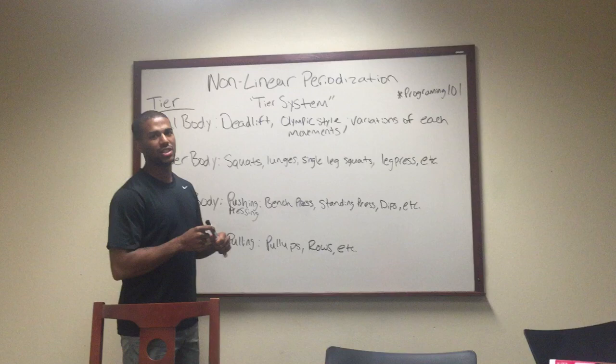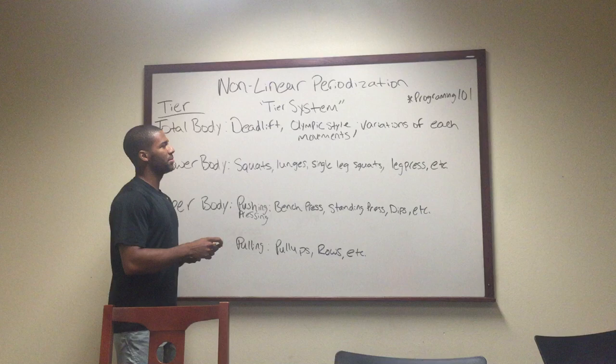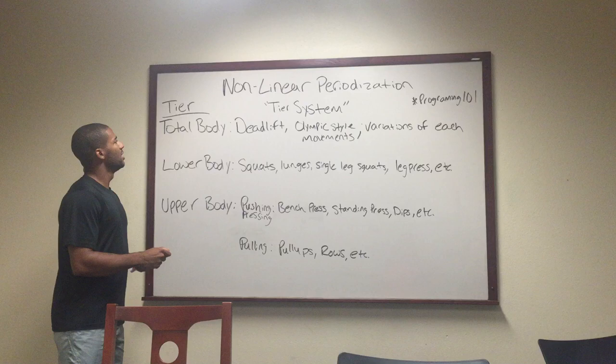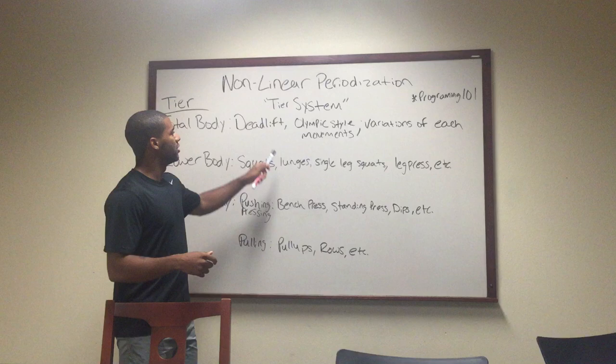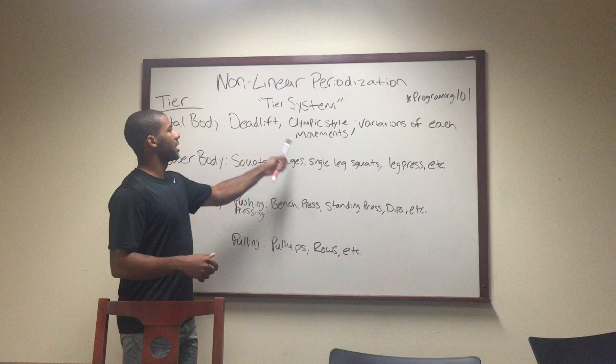The tier system is broken up into three tiers: total body, lower body, and upper body. Total body refers to any movement that you do with your total body — so it's going to be like your deadlift, any of your Olympic style movements, and variations of each. So it could be hang clean, snatch, power clean, squat clean, any type of variation of deadlift.